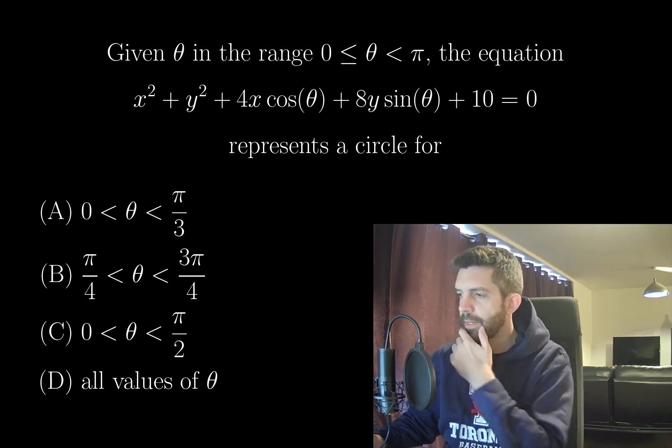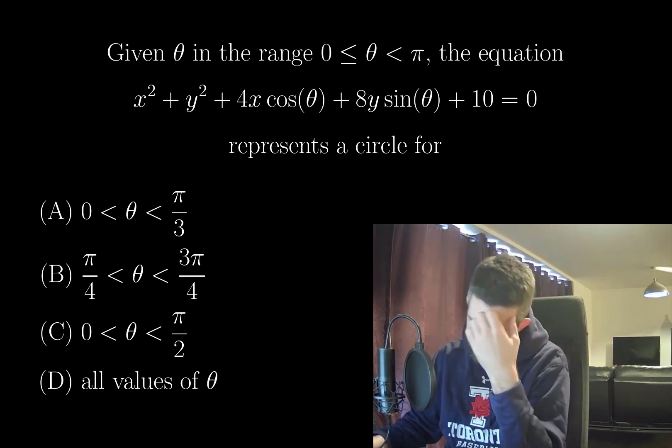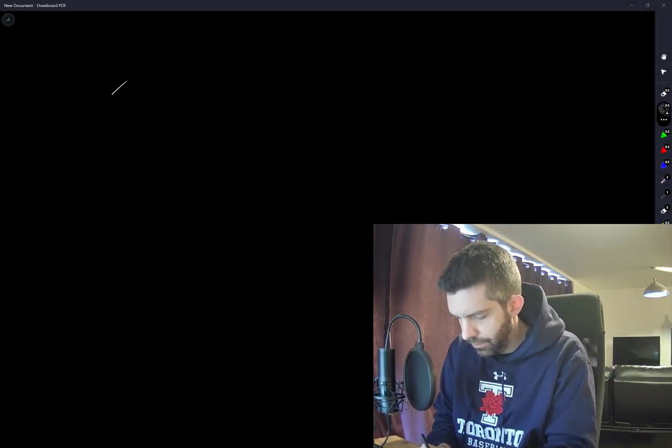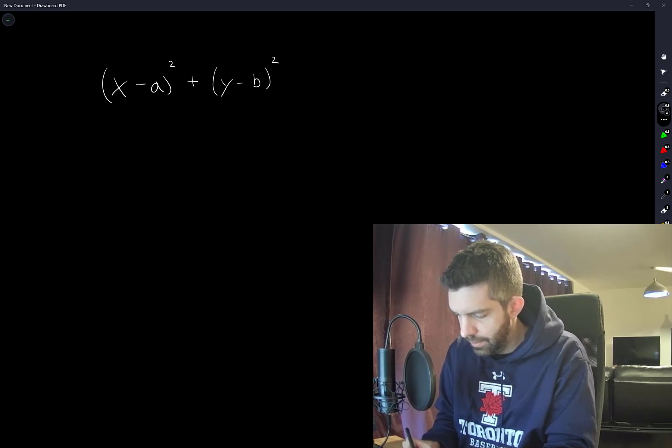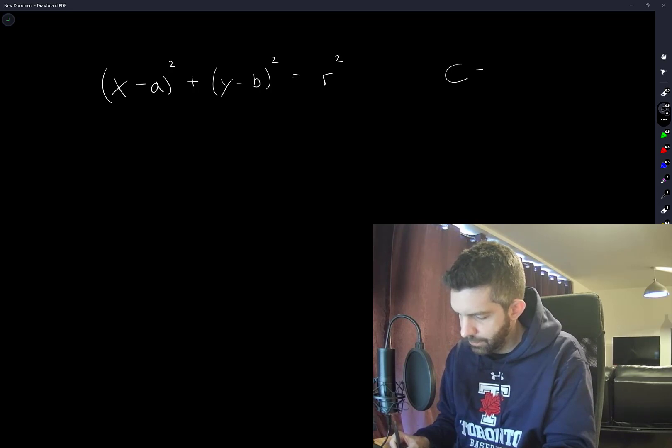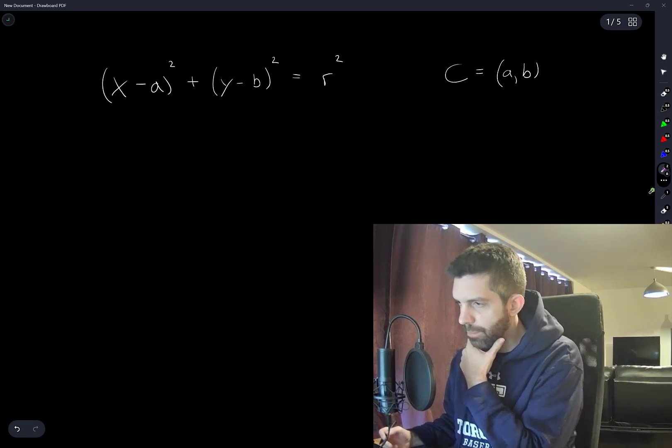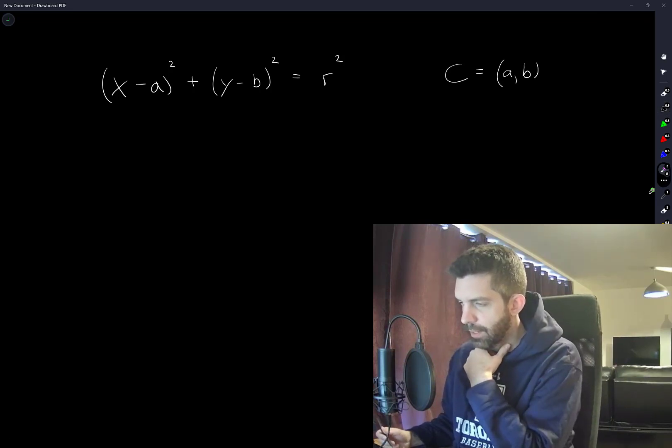So what is the idea here? The general formula for a circle is (x - a)² + (y - b)² = r², and the center for a circle like this is (a, b). So I suppose what we could start by doing is rewriting this equation in this form.